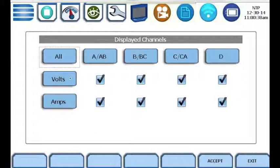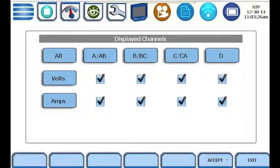To turn all channels on or off for any voltage or current parameter, click the Volts or Amps button. You can turn on or off the voltage or current for any channel by clicking the Channel label. When your selections are complete, click the Accept button.